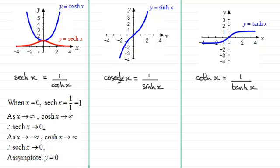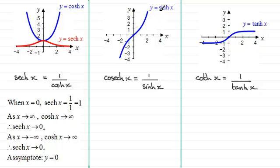Now let's look at the graph of y equals cosech x, which is defined as one over sinh x. You might like to have a go at this one — pause the video and when you come back you can compare your graph methods to mine. So again, I look at what happens when x is zero. When x is zero, sinh x is zero, so we end up with one divided by zero, which is undefined. I need to look at the behaviour of the curve when x gets closer to zero from the positive side and from the negative side.